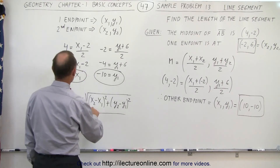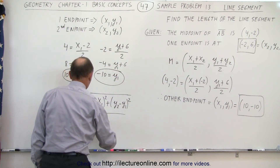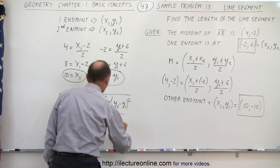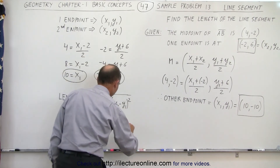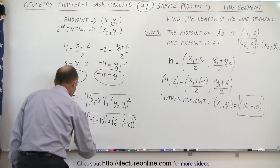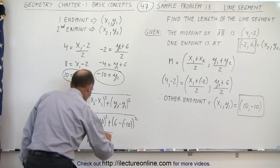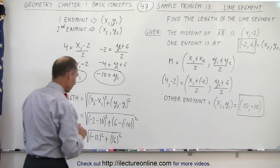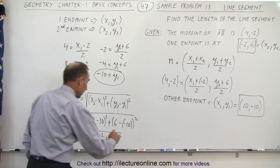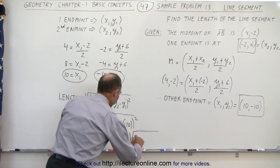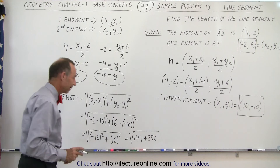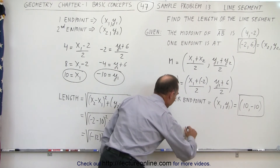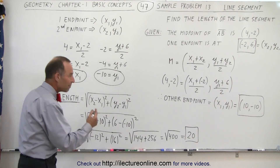This equals the square root of (x2 - x1) squared plus (y2 - y1) squared. x2 is -2 minus x1 which is 10, and y2 is 6 minus y1 which is -10. So this is the square root of (-12) squared plus (16) squared — it doesn't matter if it's negative since we're squaring it. That gives us the square root of 144 plus 256, which equals the square root of 400, which equals 20. So the length of line segment AB is 20.